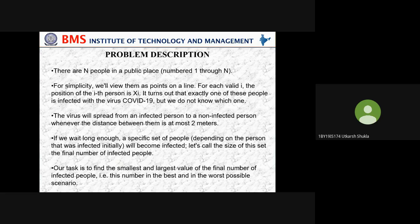Moving on to the problem statement — let's suppose there are N number of people in a public place. For simplicity, we will view them as points on a line. For each valid i, the position of the i-th person is x_i. It turns out that exactly one of these people is infected by the coronavirus, but we don't know which one. The virus will spread from an infected person to a non-infected person whenever the distance between them is at most two meters.